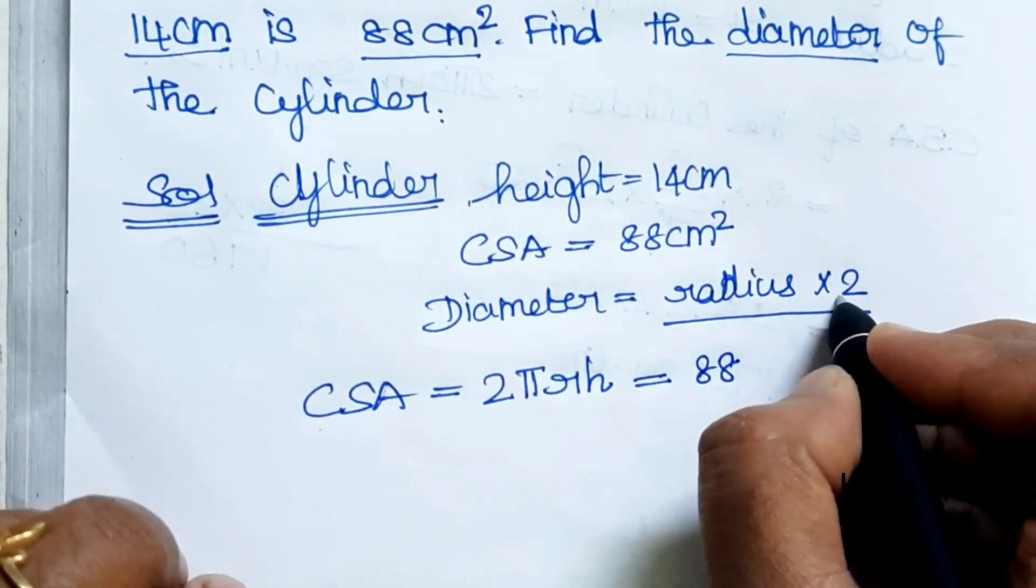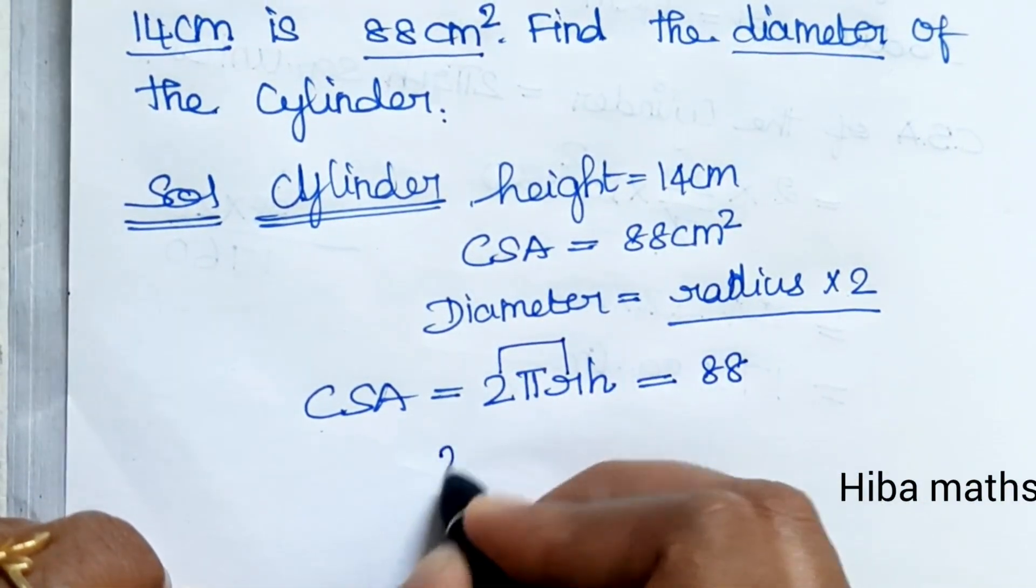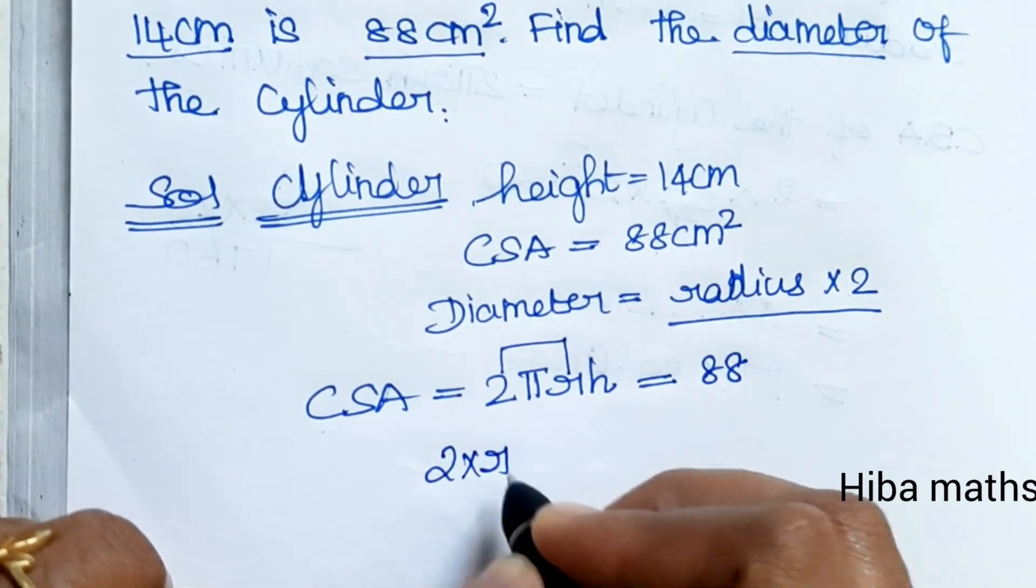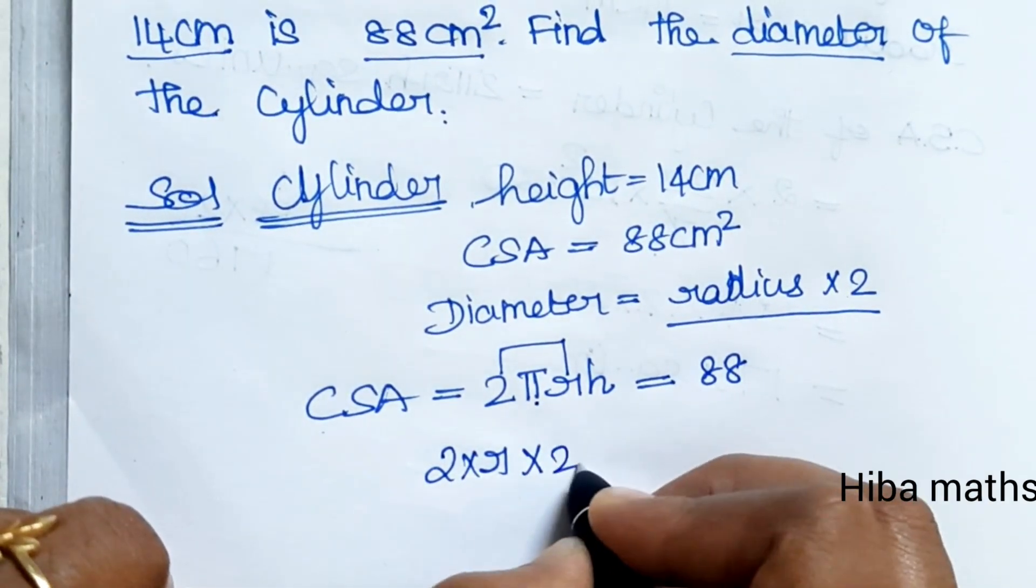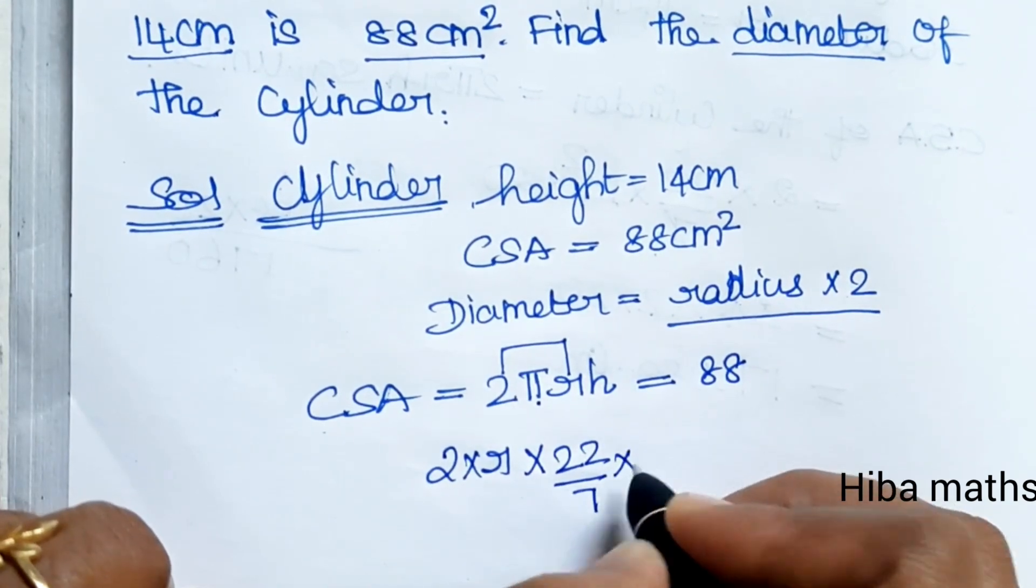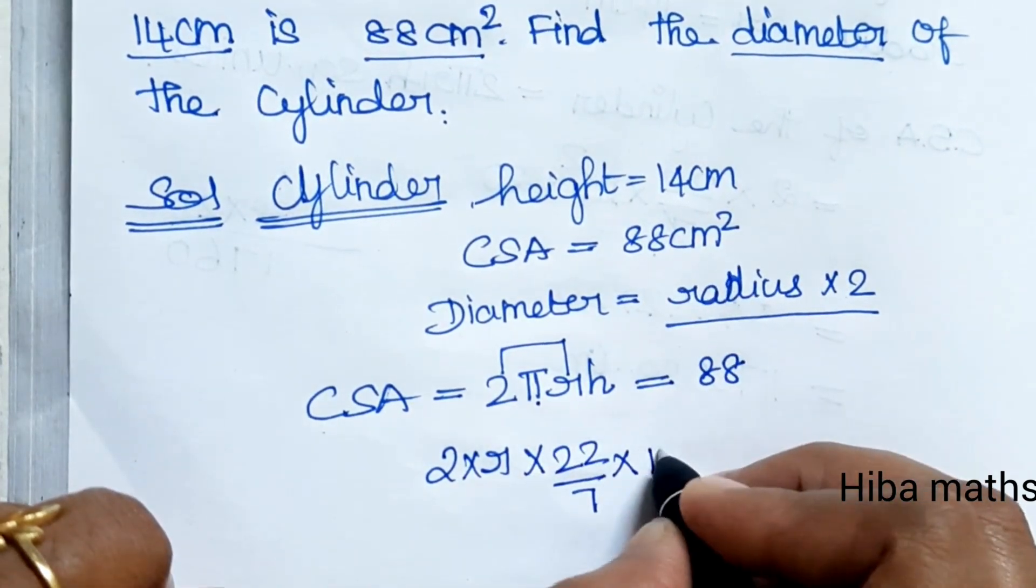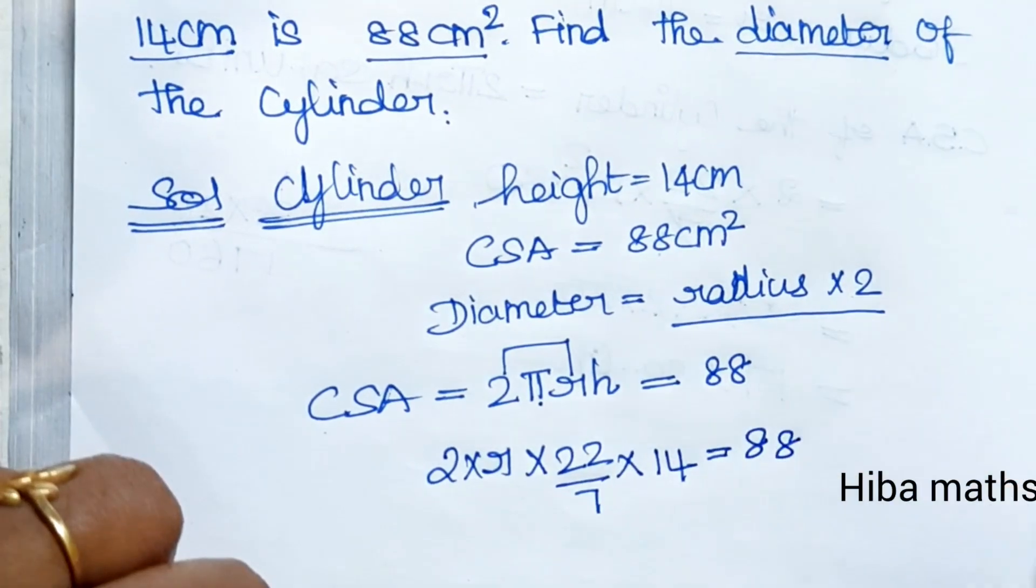Since 2 into R is diameter, we can directly substitute the π value 22 by 7 and height value 14. This equals 88.